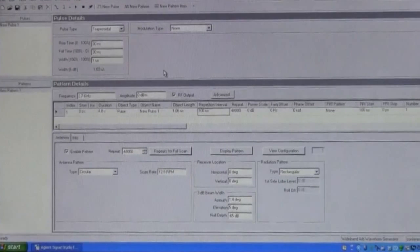In Signal Studio we're going to change the pulse width to one microsecond. We're going to change the center frequency to 2.7 gigahertz. We're going to click add new pattern item to add a pulse to the pattern detail window and then we're going to change the PRI or the repetition interval to 100 microseconds. We're going to change the antenna pattern type to circular. We're going to change the scan rate to 12.5 RPMs and we're going to change the 3 dBm beam width characteristics accordingly.